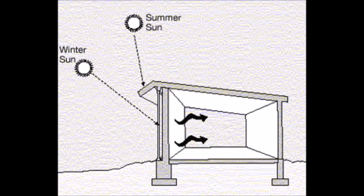A Trombe wall is a passive solar building design where a wall is built on the winter sun side of a building with a glass external layer and a high heat capacity internal layer separated by a layer of air.